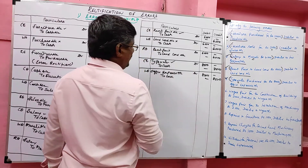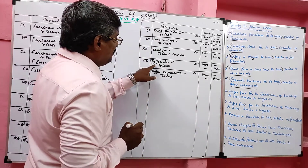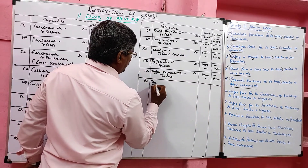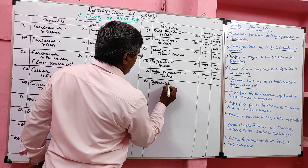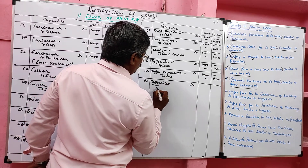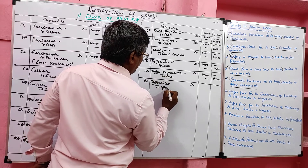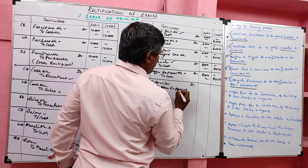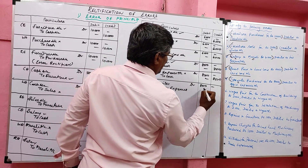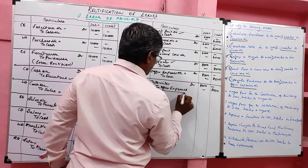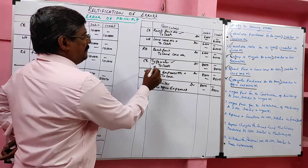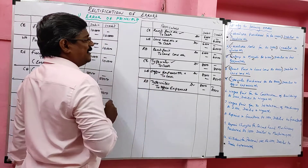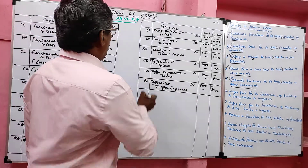Typewriter should be on the debit side. Rectified entry: typewriter account debit to office expenses account — office expenses was on the debit side, so for cancellation it goes to the credit side. Narration: error rectified. Typewriter is a real account; office expenses is a nominal account. Instead of recording real account, they recorded nominal account — this is error of principle.